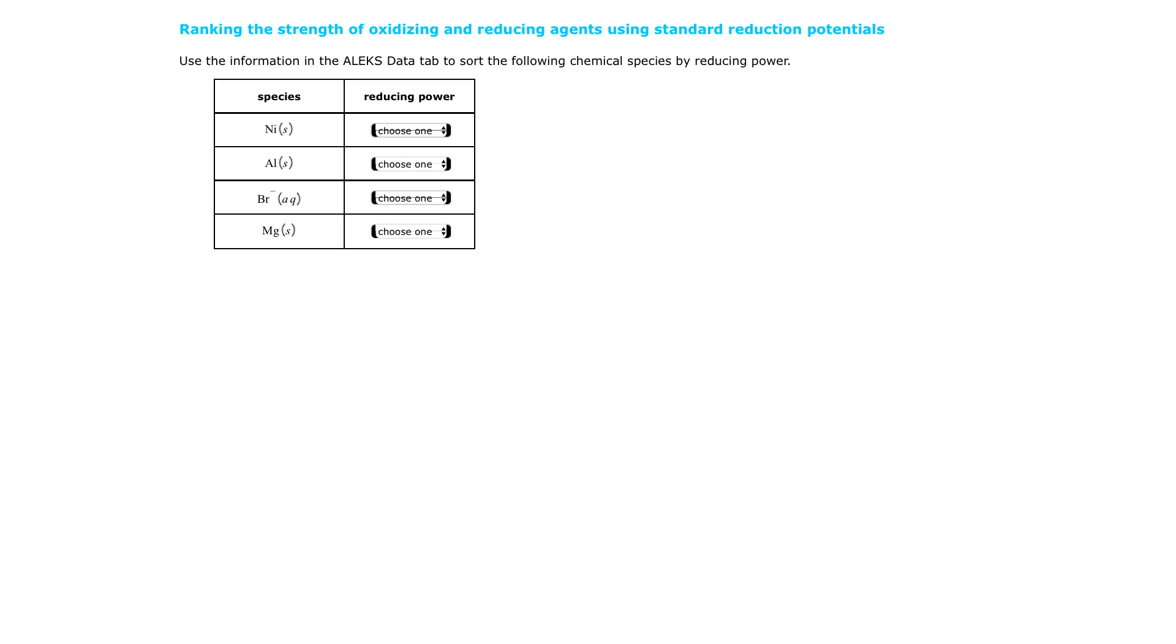So they're asking you to go to the Alex data tab, which is this table, especially using the ones that they're going to ask you. So I am going to write down what I saw when I went to the data table. First of all, I saw nickel 2 plus aqueous, plus 2 electrons, yields nickel solid.